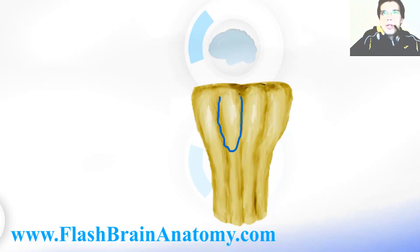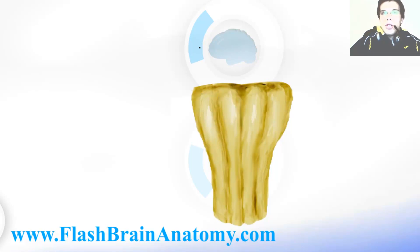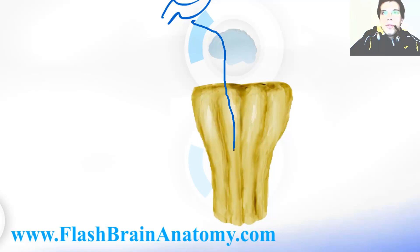These two structures are the pyramids of the medulla oblongata. They are the elevations caused by the corticospinal tract — the tract that goes from the cortex of the brain through the pyramids and down to the spinal cord.